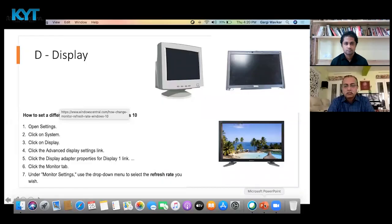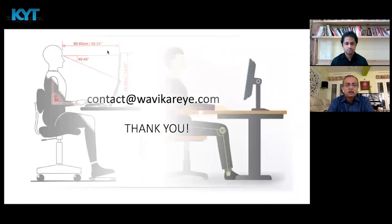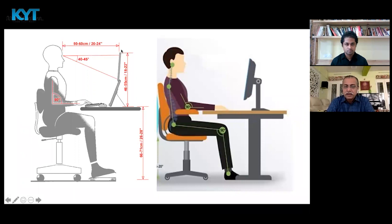Doctor, what about the posture — how should the posture be when consuming a screen? The best posture for the body is the primary posture or sitting the way Sai Baba sits, with one leg crossed. These are very relaxing postures, but the crossed-leg posture is not possible when working on a computer, so we have to sit in the primary posture.